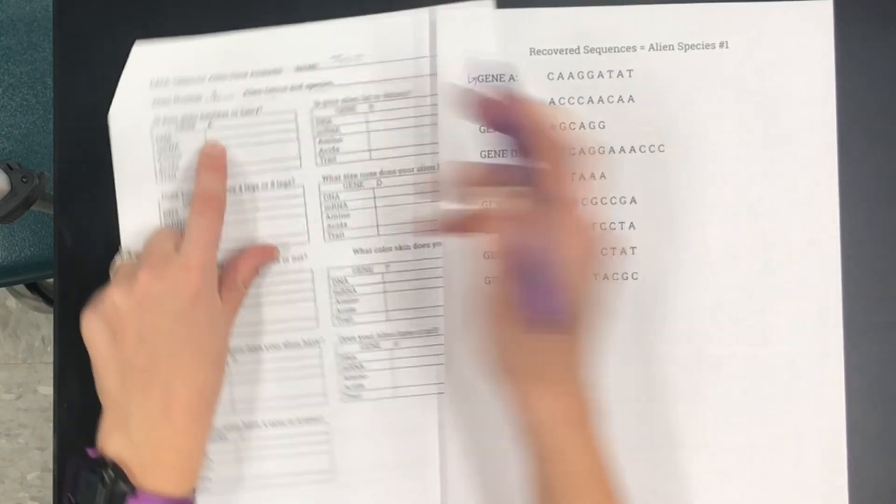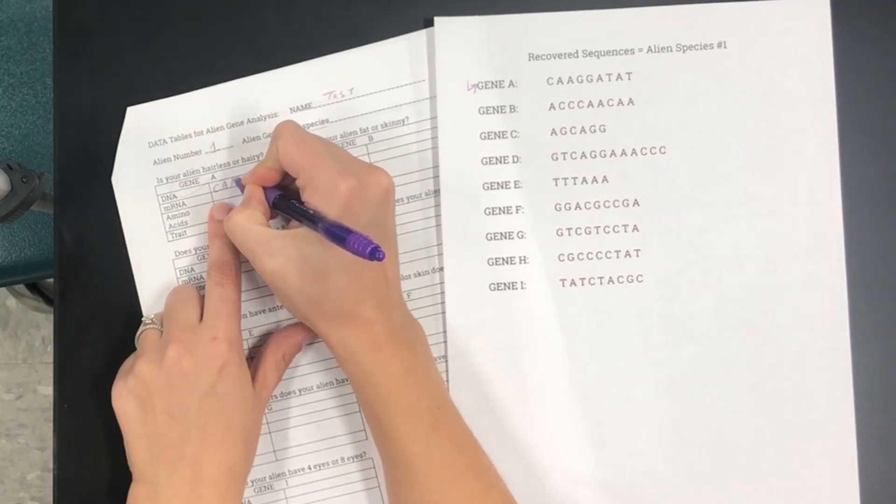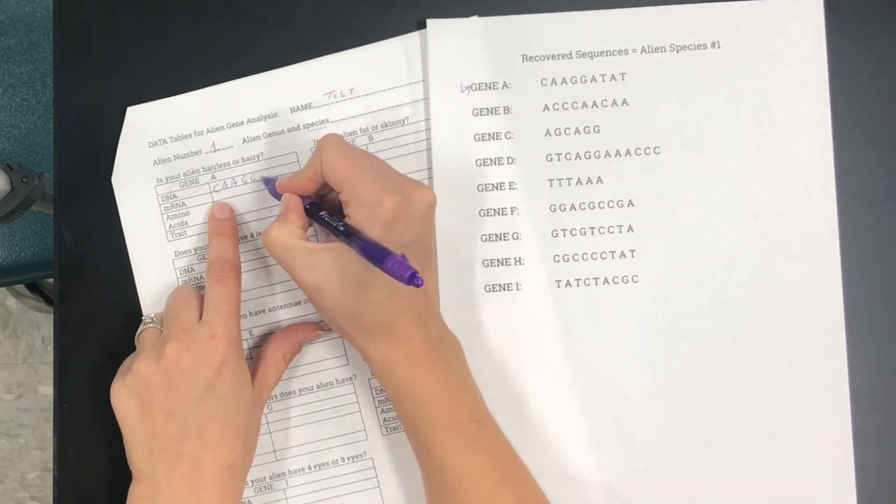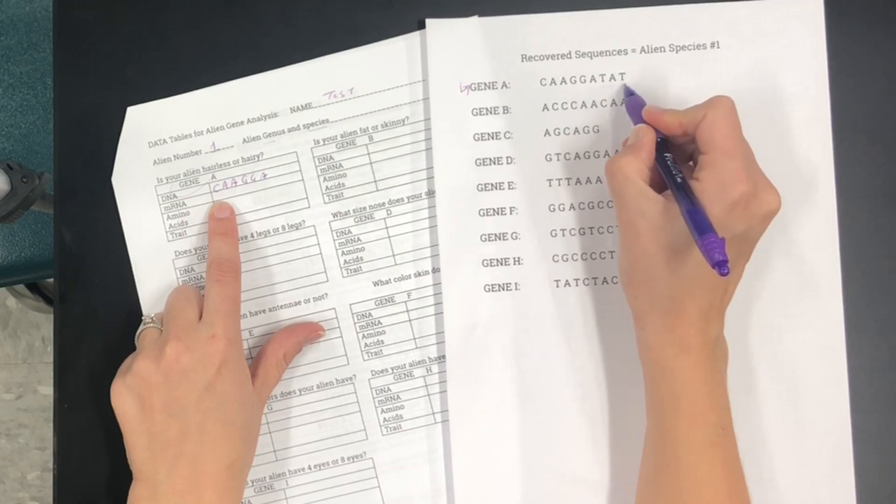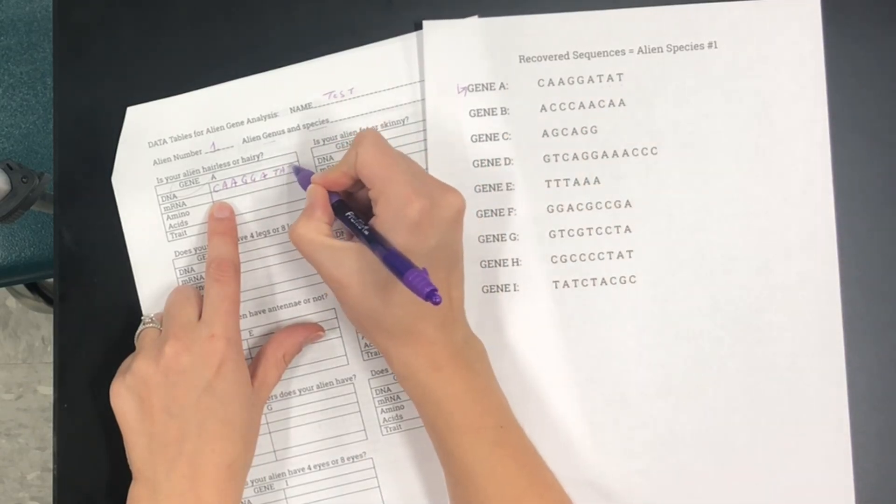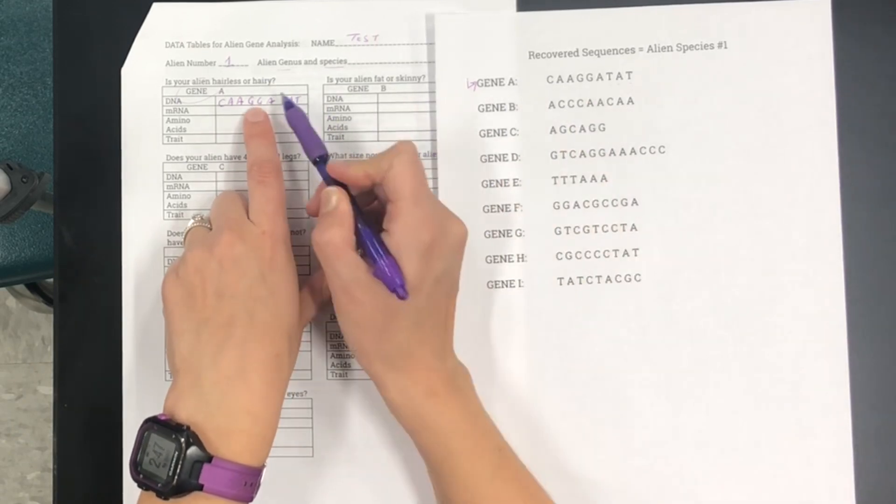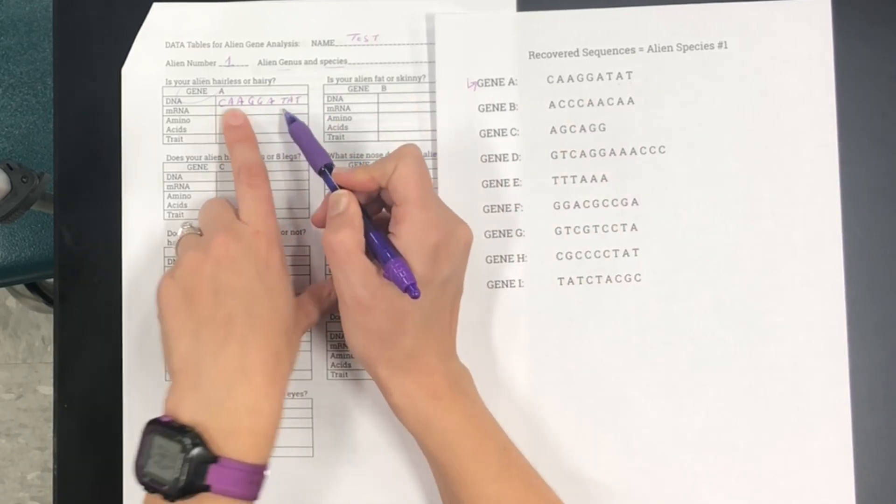So this is CAA. So I'll write CAA, GGA, GGA, TAT. And this is where you want to be very careful not to make a mistake because if you make an error while you're copying this over this is going to screw up your entire protein synthesis.